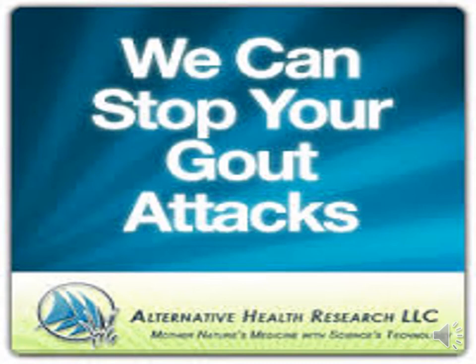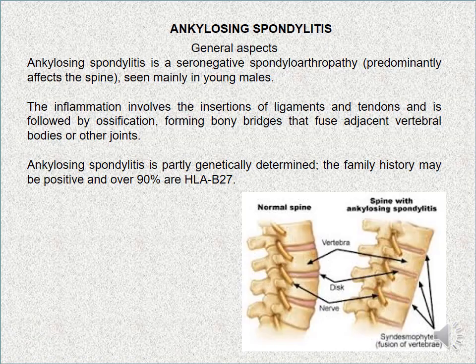We now continue the lecture with the last disease — ankylosing spondylitis. In general, ankylosing spondylitis is a seronegative spondyloarthropathy that primarily affects the spine, seen mainly in young males. The inflammation involves the insertion of ligaments and tendons and is followed by ossification forming bony bridges that fuse adjacent vertebral bodies or other joints. Ankylosing spondylitis is partly genetically determined — family history may be positive — and the antigen present is HLA-B27.